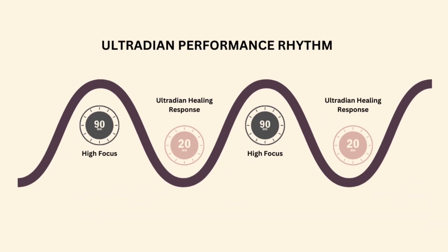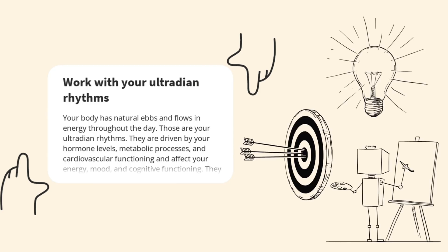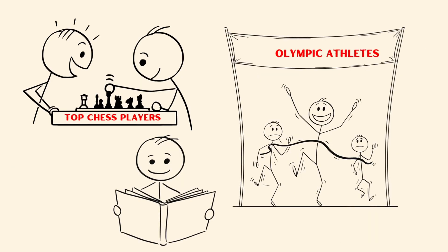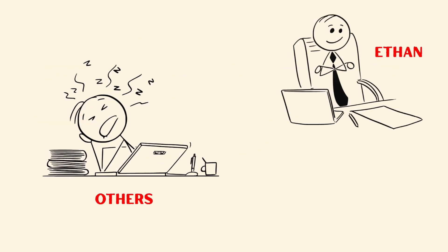Because your brain runs on ultradian rhythms. Natural 90-minute cycles of peak energy, focus, and creativity. Top chess players, Olympic athletes, elite students, they all swear by it. Instead of slogging through six mindless hours, Ethan works in sharp 90-minute bursts, followed by a quick 15-minute recharge.